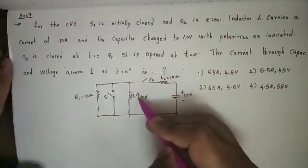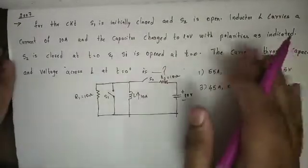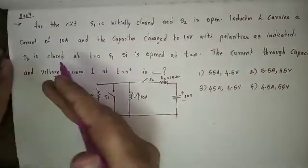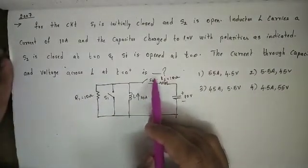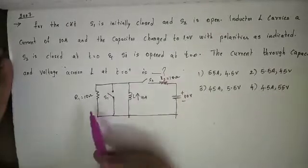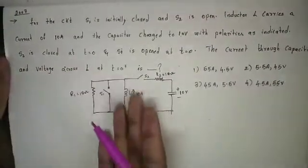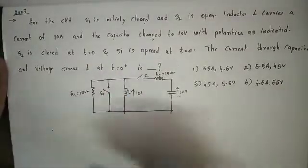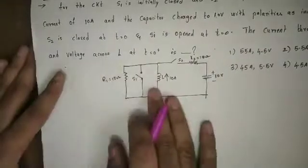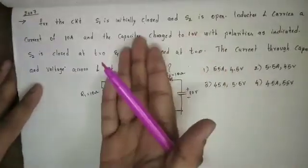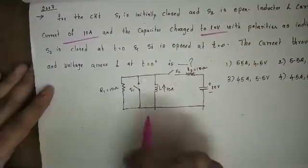The first initial condition is the current direction in the inductor, and the capacitor voltage polarity. S2 is closed at t = 0. So at t = 0, S2 closes and S1 opens. We need to find the current through the capacitor, iC(0+), and the voltage across the inductor, VL(0+).